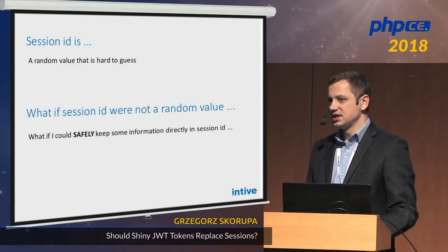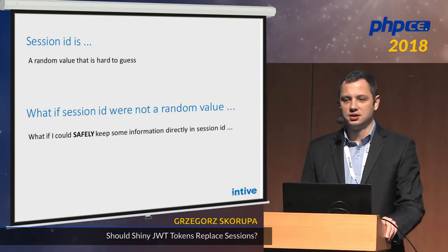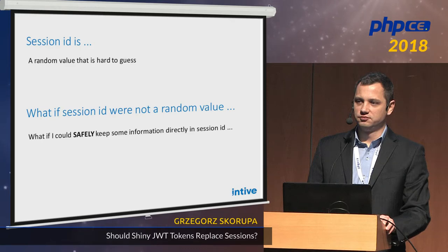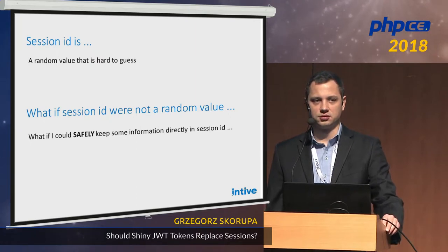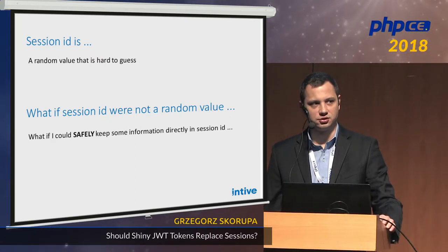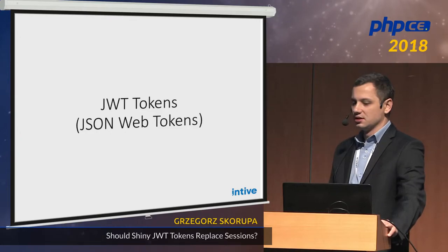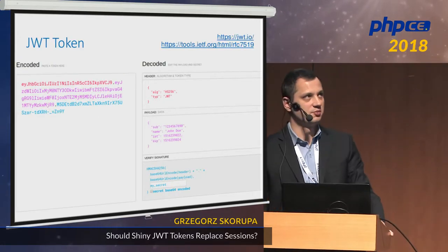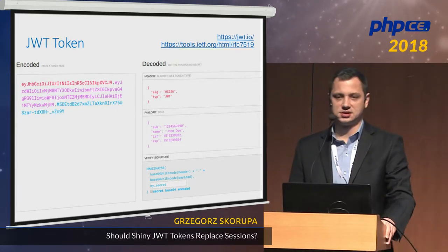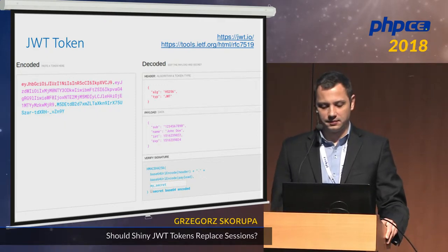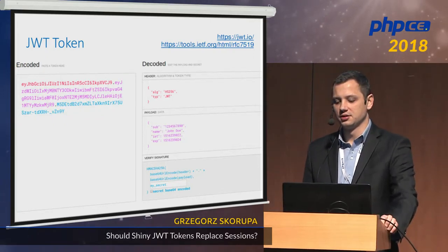A session ID is simply some random string that is hard to guess. But we can imagine — why are we sending this ID at all? Why can't we just send some data there and be sure that this data is safe? Here we come to the idea of JSON Web Token, which consists of three parts. It's a string that you see on the left — this is the way you see them in the wild. It's base64 encoded, and once you decode it, you will see JSON for a header, a payload, and a signature.